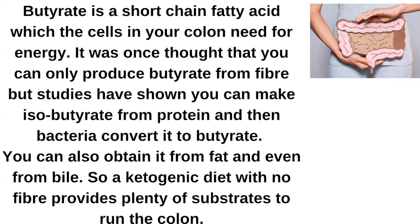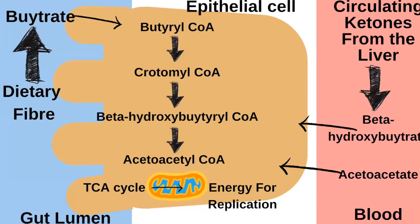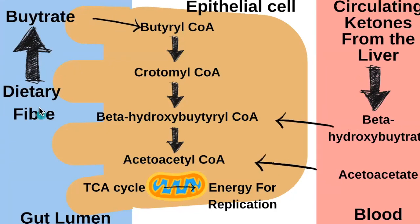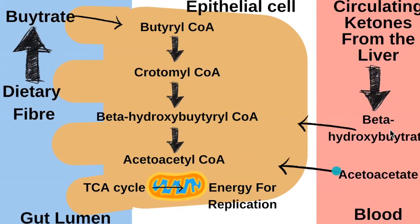The fats contained in bile can also be used. A ketogenic diet with no fiber absolutely provides plenty of substrates for the colon, and so does a carnivore diet. Butyrate can be produced from fermentation of dietary fiber entering gut epithelial cells and giving energy in the colon, but protein fermentation can also give you butyrate. Even ketones from the blood can work in the colon. Ketones from the liver - beta-hydroxybutyrate - can go into the cycle, as can acetoacetate, which are well-known products of the ketogenic diet.